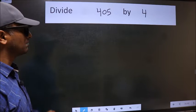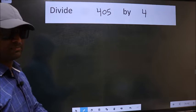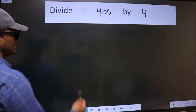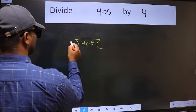Divide 405 by 4. To do this division, we should frame it in this way: 405 and 4 here.